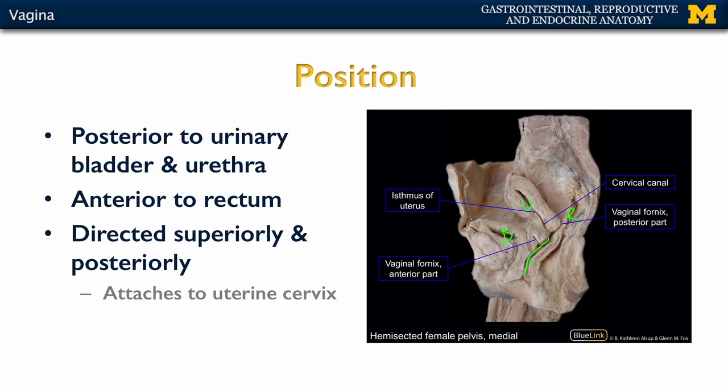One thing to note here: if we think about those pouches discussed in a previous lecture, you have your vesicouterine peritoneal pouch here, and then your rectouterine pouch here. It's very closely associated with that rectouterine pouch. So if you're doing a digital exam, you could actually enter a needle close to the peritoneal cavity if you ever needed to remove fluid in that region.